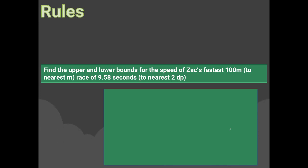Find the upper and lower bounds for the speed of Zack's fastest 100 metres: distance is 100 metres to the nearest metre, and time is 9.58 seconds to the nearest two decimal places. The speed formula is: speed = distance ÷ time. Since we are dividing, the rule is: upper bound speed = upper bound distance ÷ lower bound time; lower bound speed = lower bound distance ÷ upper bound time.